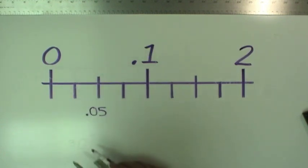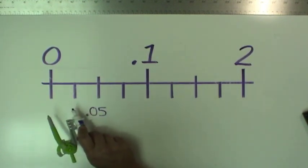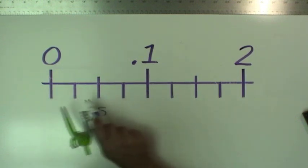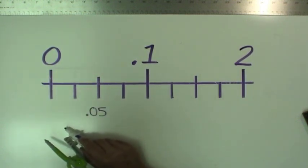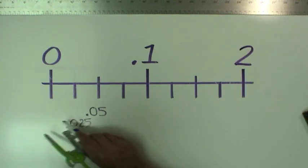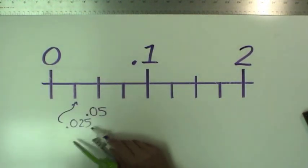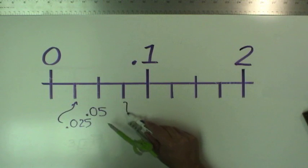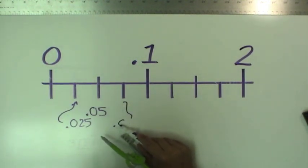And then of course this would be a quarter of a tenth. This would be 0.025 to that mark. This mark is 0.05, this mark would be 0.075.